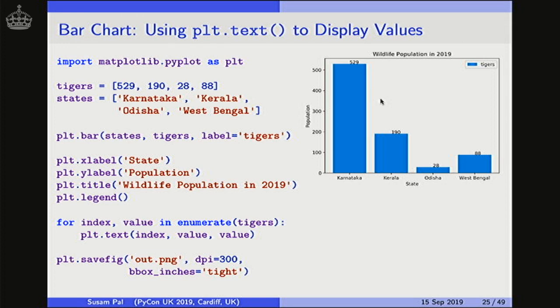So how do we find these x and y coordinates for these numbers to be placed in this plot? In case of bar charts, quite conveniently, these bars are situated at integer coordinates along the x axis. For example, this first bar is placed at x equal to 0 and the second bar is placed at x equal to 1 and so on. So we will ask the text function to place this 529 at x equal to 0 and y equal to 529 which is the height of this bar. And this for-loop here is to do the same thing for all four numbers in this tigers list.